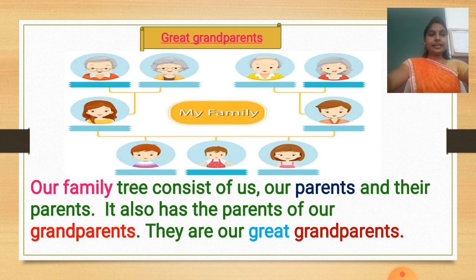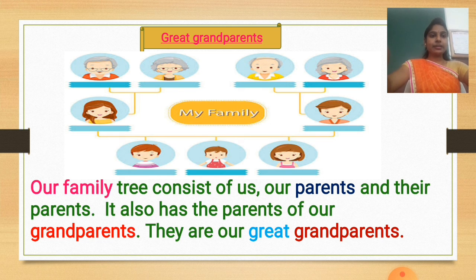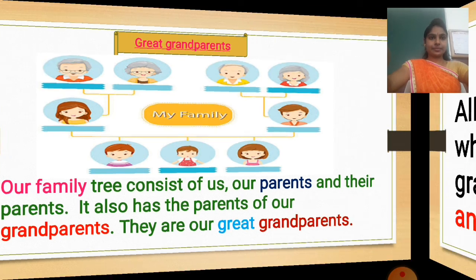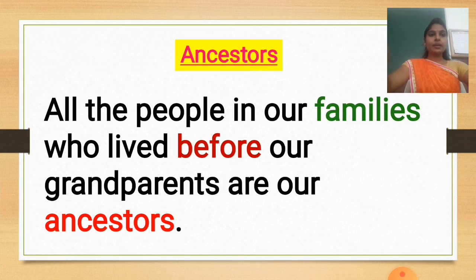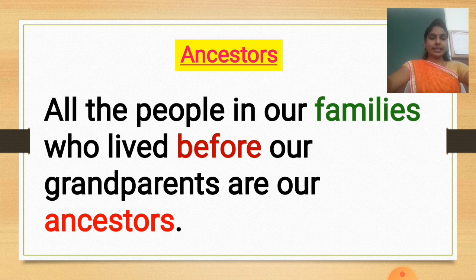Great-grandparents. Our family tree consists of us, our parents, and their parents. It also has the parents of our grandparents — they are our great-grandparents. Ancestors means what? All the people in our families who lived before our grandparents are our ancestors.